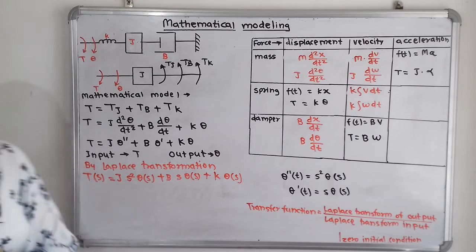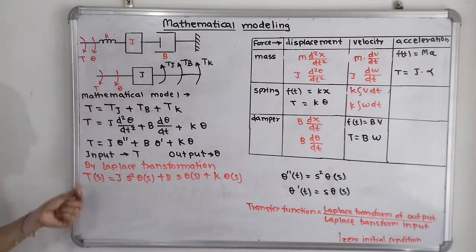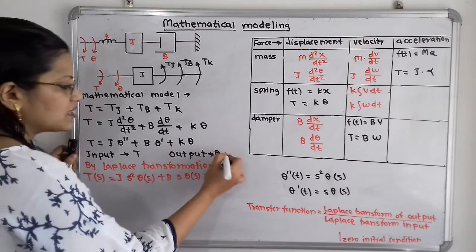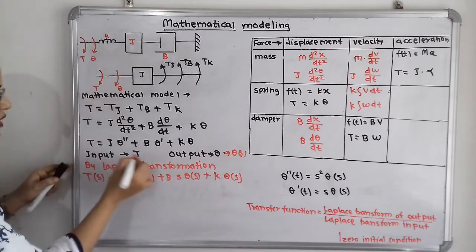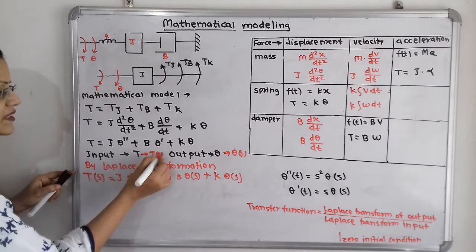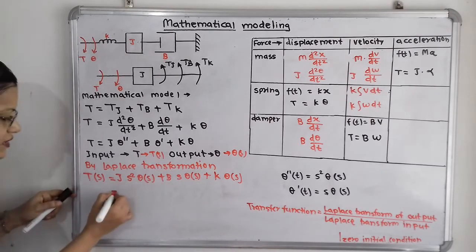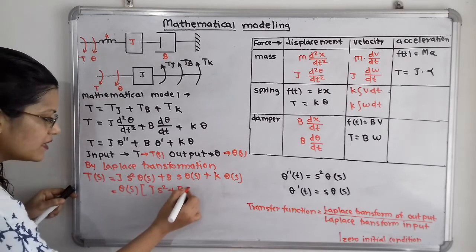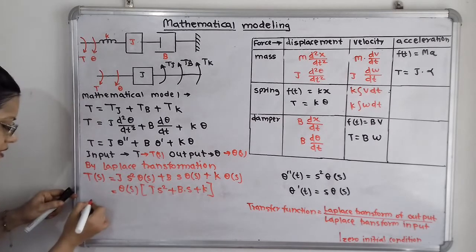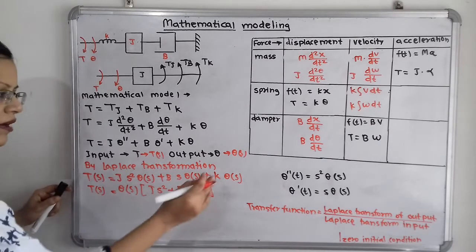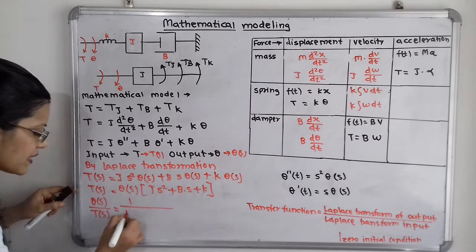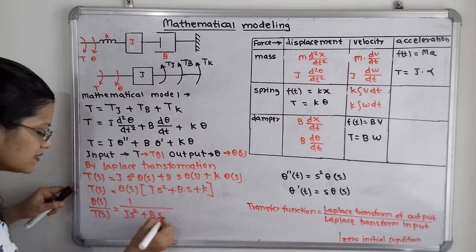Now we take the transfer function as the ratio of output to input. Taking Theta(S) as common: Theta(S) times the quantity J-S-squared plus B-S plus K equals T(S). Therefore, Theta(S) divided by T(S) equals 1 divided by JS-squared plus BS plus K. This is the transfer function for the given mechanical rotational system.